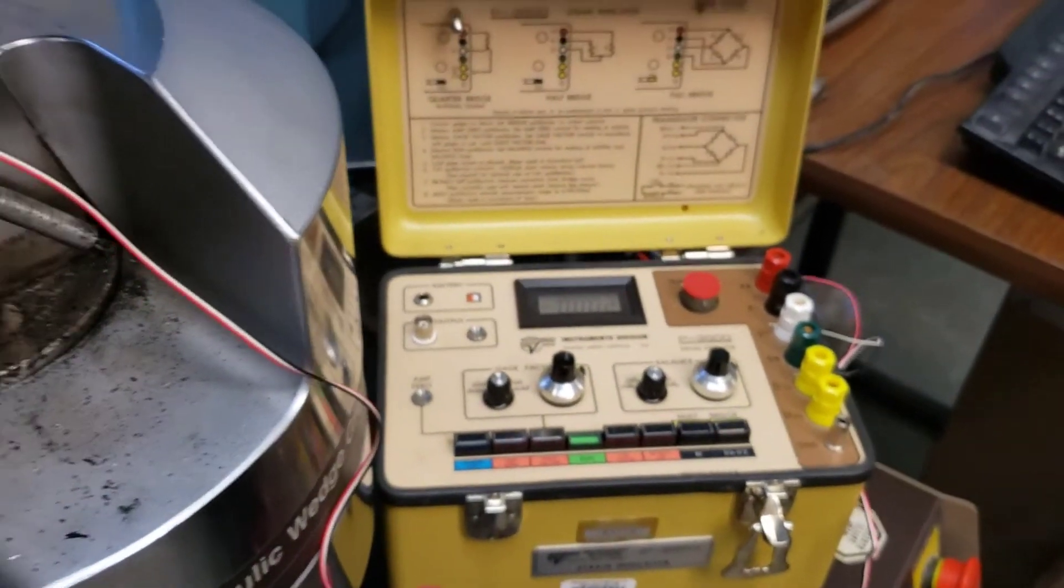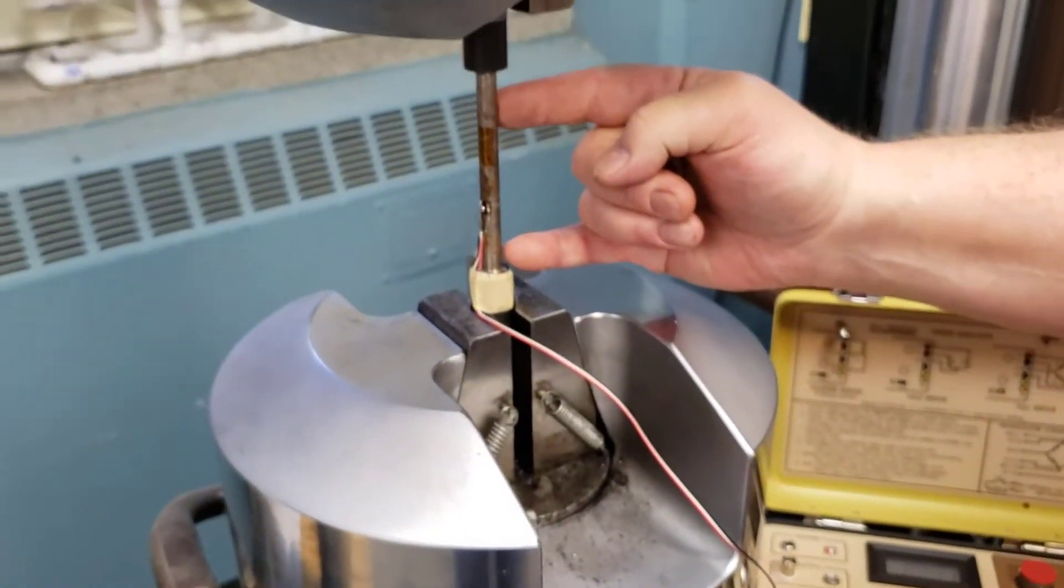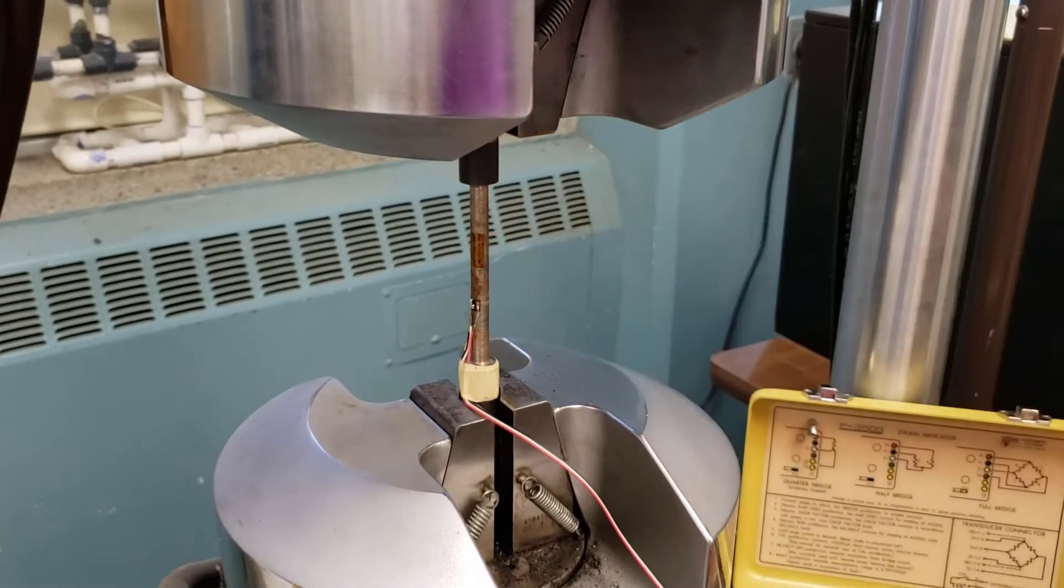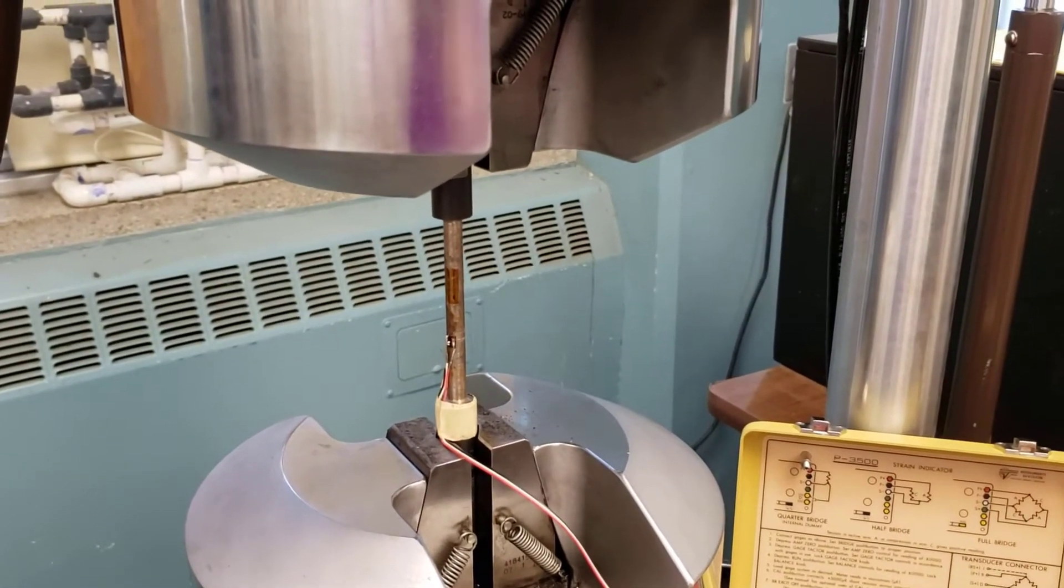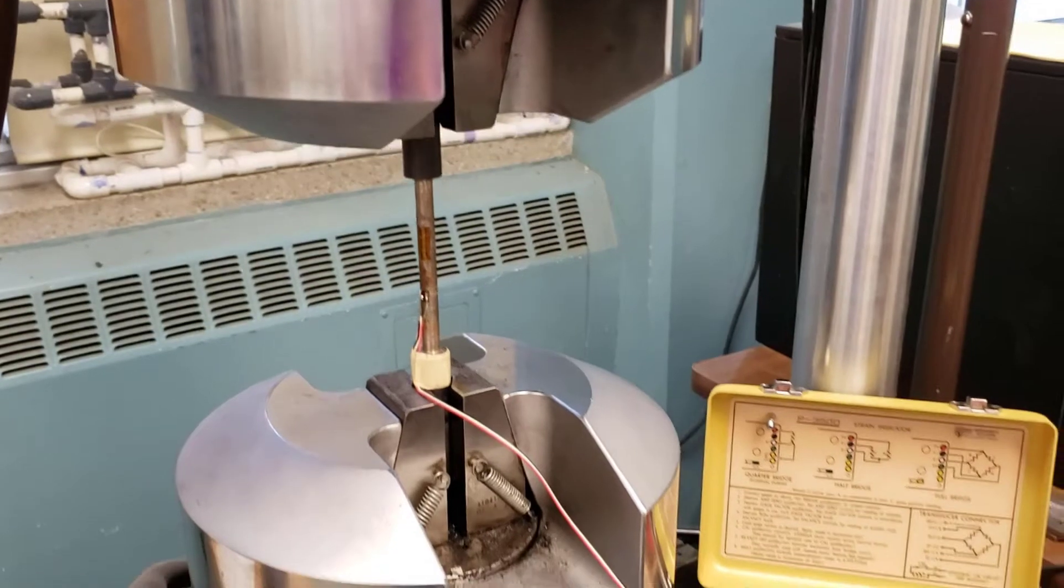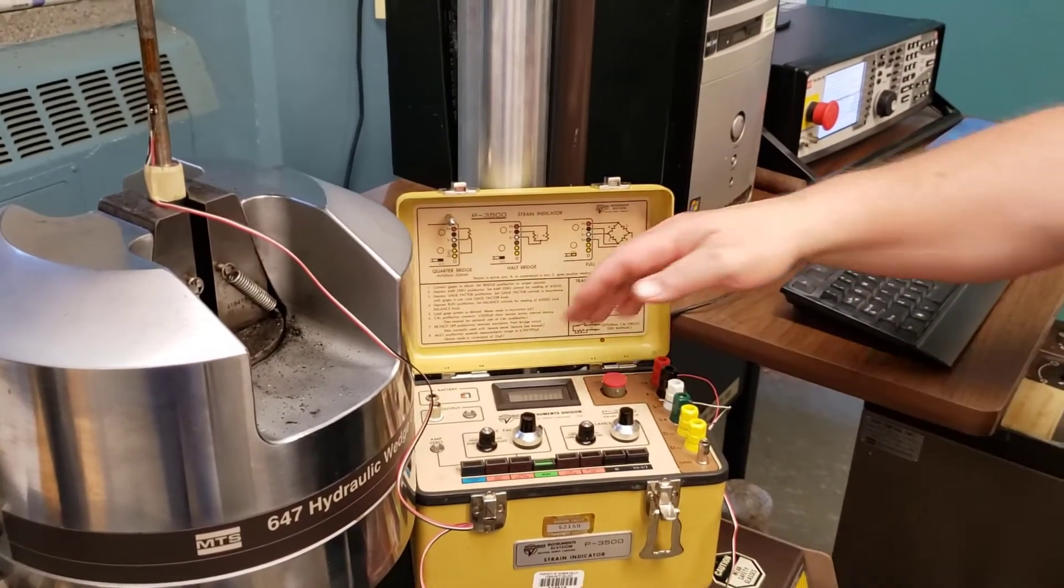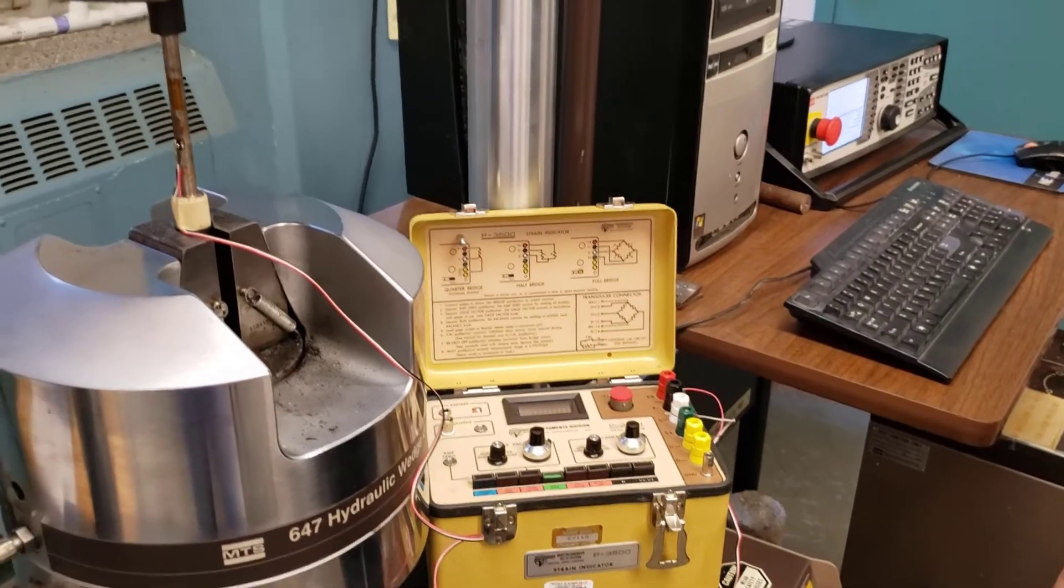And what's going to happen is when we pull on this sample, that changes the wire thickness and should change the resistance, and we get a reading that we can then convert into stress. This is strain, and it's in microstrain. So if this reads 50, it's 50 microstrain.